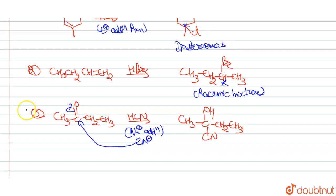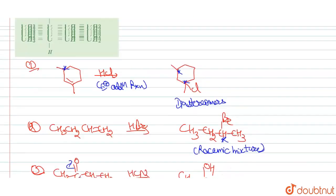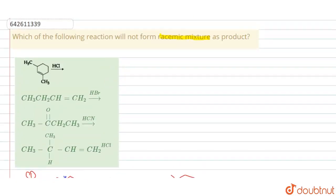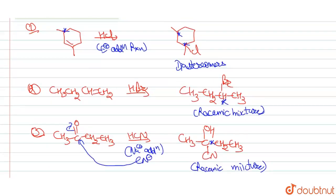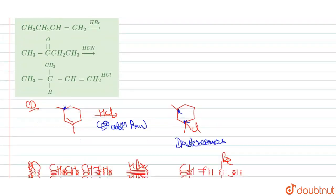Here another we have new chiral carbon is formed because it has all four different groups. There is also racemic mixture is formed. Racemic mixture as product is formed. We have to determine which will not form racemic mixture. So our answer is till now option one.